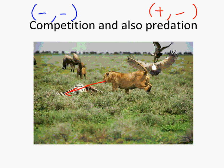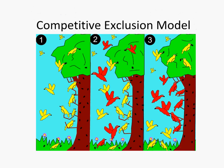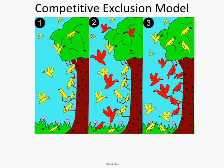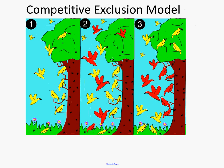Before moving on from competition, there is a model called the competitive exclusion model. It states that each species has its own niche in an environment and two species cannot occupy the same niche. In this cartoon, yellow birds are eating throughout a whole tree; red bird arrives and also eats there. Rather than fighting it out, each bird occupies a particular niche — red birds eat off the trunk, yellow birds eat off the ground and leaves. If a species doesn't adapt, one of them will die off.